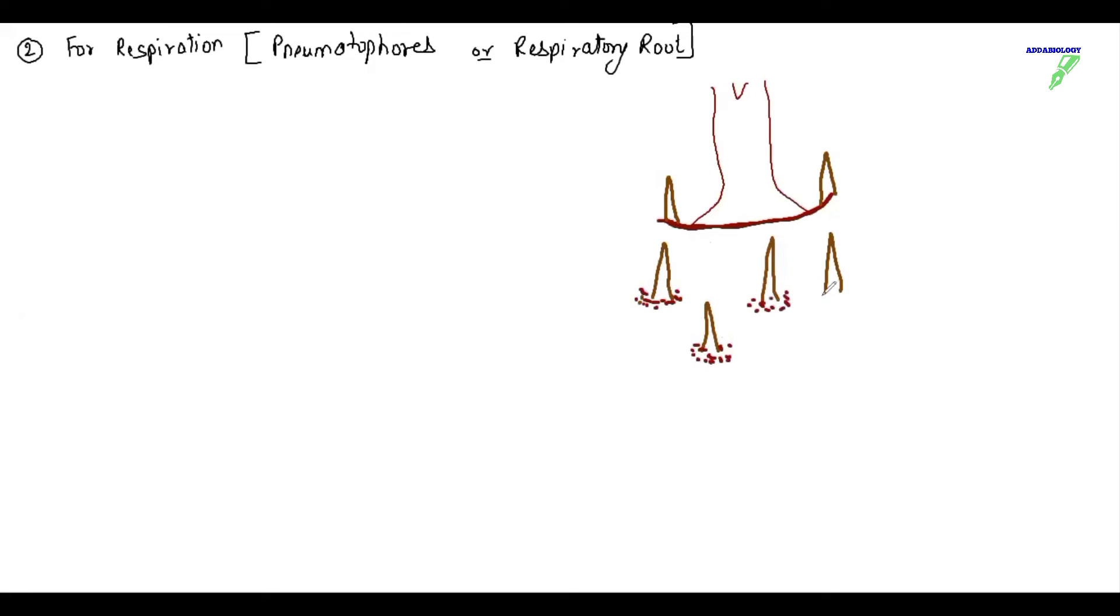The next modification is for respiration. Most of the time it has been observed in salty areas, the roots are not able to breathe. So they modify themselves. These are called pneumatophores. Even they are called respiratory roots. So in the salty areas or the halophytes we can say, the roots come against the gravity. They come above the ground surface. These are the only roots which are negatively geotropic, means they move against the gravity and they come above to form pneumatophores. These pneumatophores, they are having some conical projections. They are called conical spikes, and on this spike you are going to get small small openings that is called lenticels. These lenticels help in exchange of gases.